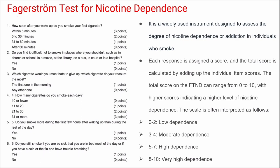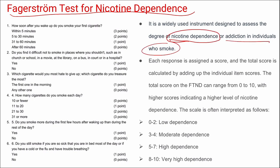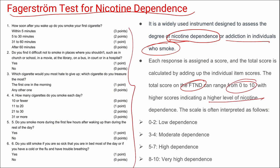Next is the Fagerström Test for Nicotine Dependence, used to assess nicotine dependence or addiction in smokers. Each response is assigned a score, and the total score ranges from 0 to 10. Higher scores indicate higher nicotine dependence, while scores of 0 to 2 indicate lower dependence. The categorization is: low, moderate, high, and very high dependence.